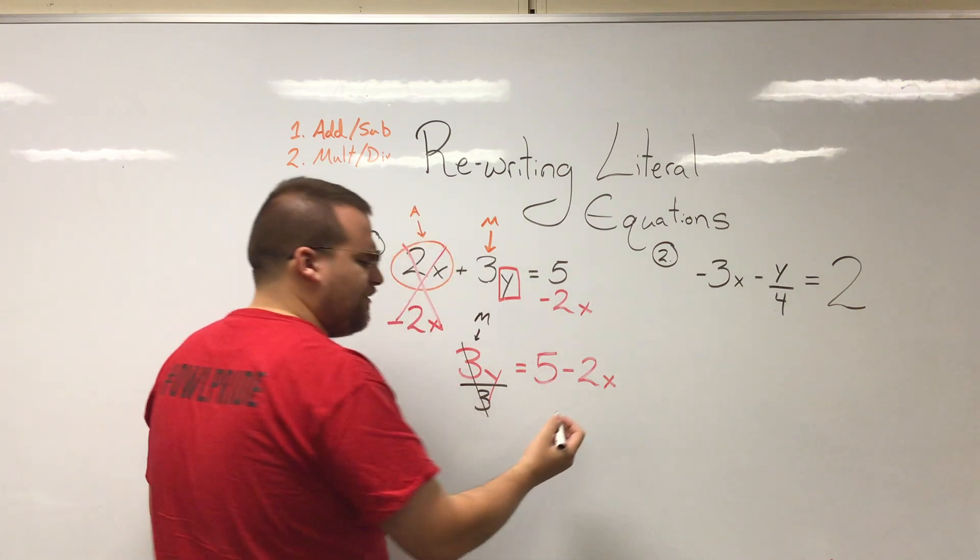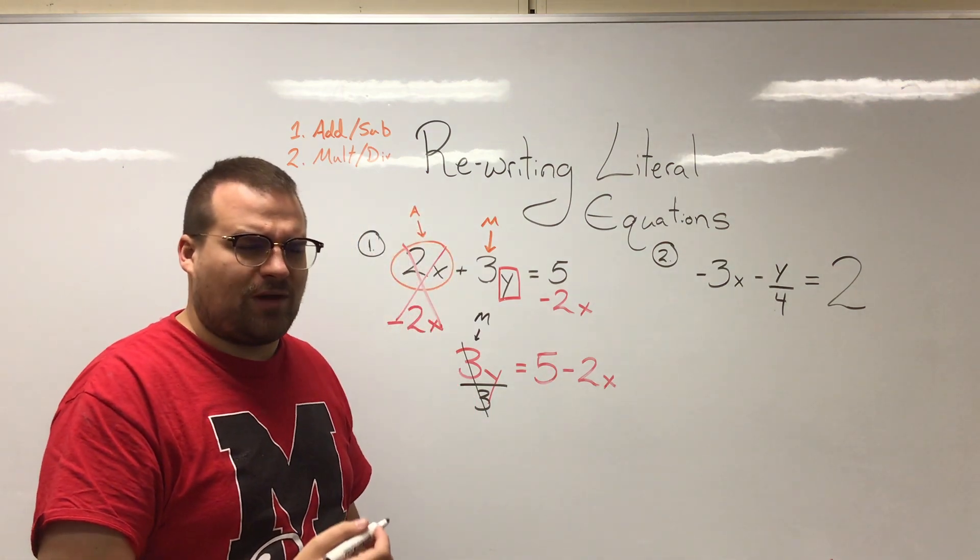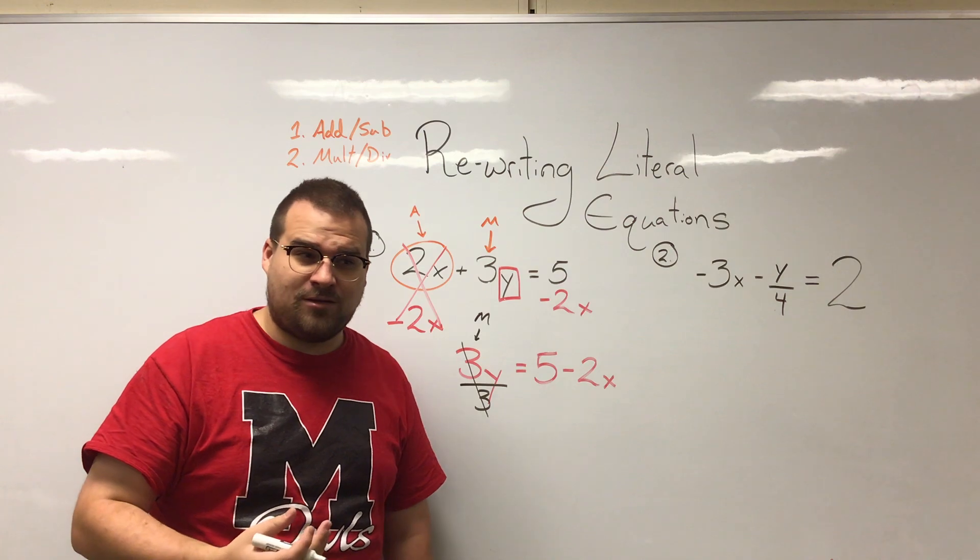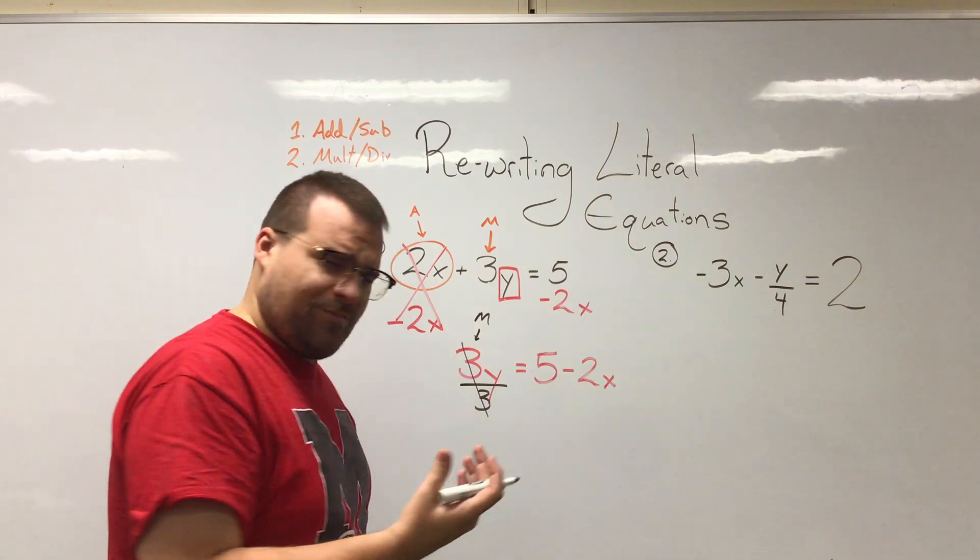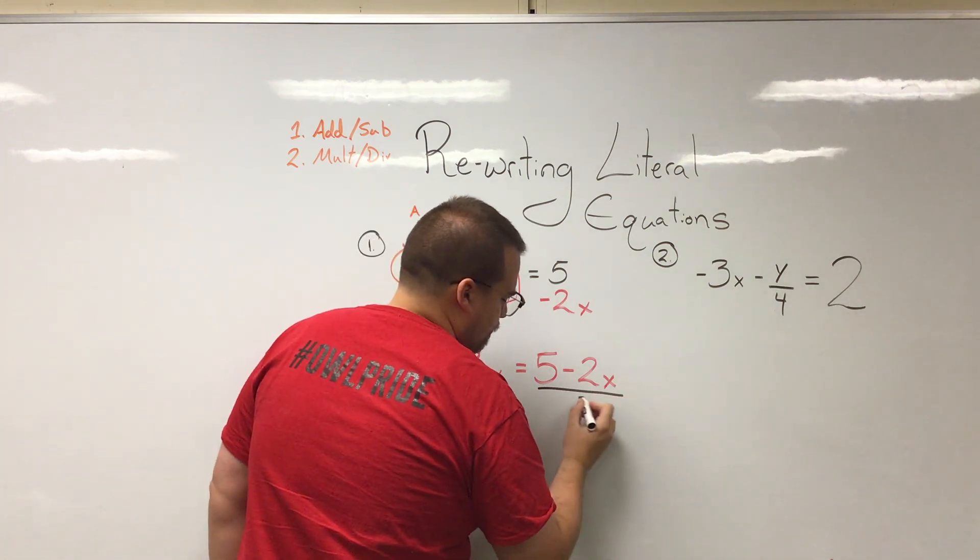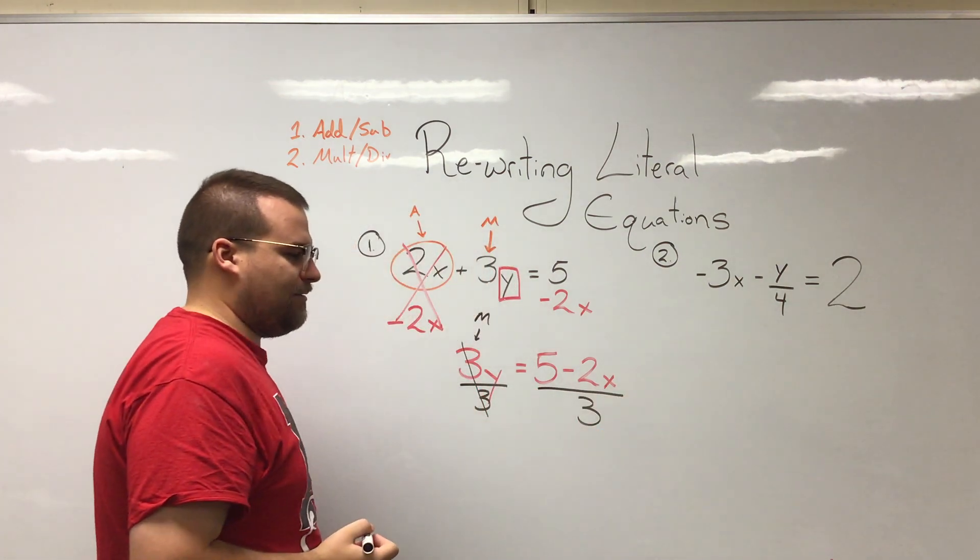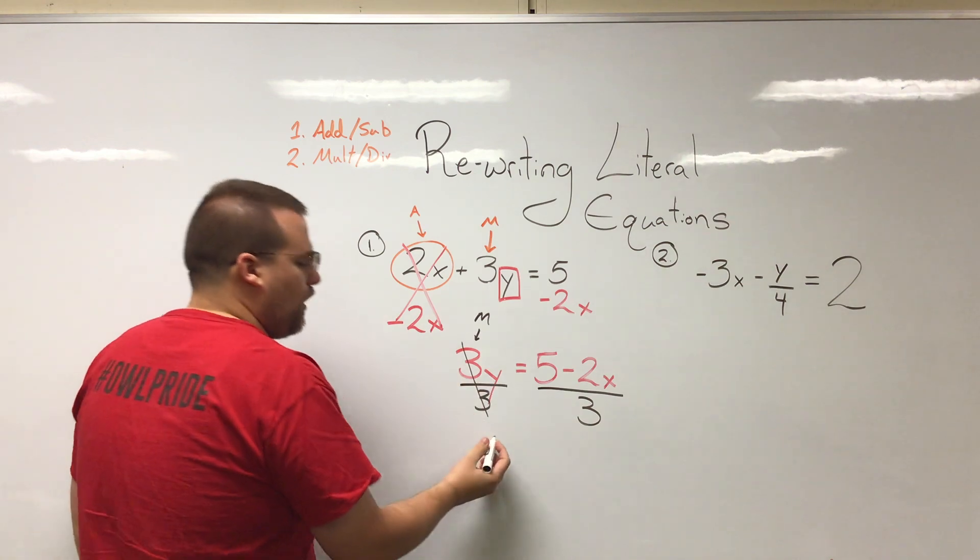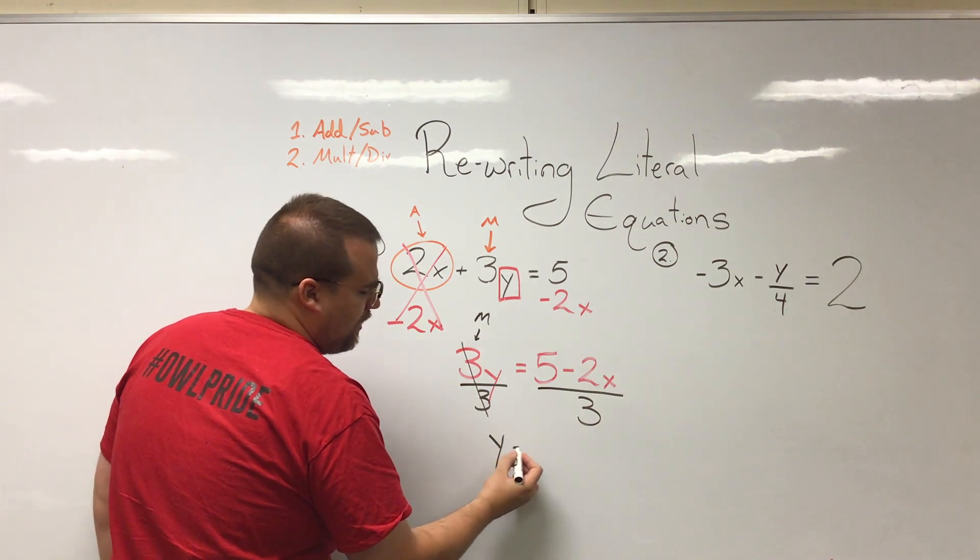Now you may be thinking what do I divide by 3 here? Do I divide the whole thing by 3? Do I divide one of those by 3? It's the whole equation just like that. So we would get y on its own, y is left all by itself.